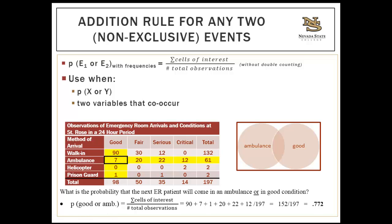For example, what's the probability that the next ER patient will come in an ambulance or be in good condition? We're looking for everything in the Venn diagram — either coming in an ambulance or being in good condition. So we're looking at patients in good condition who arrived any way, and patients in any condition who arrived by ambulance. You must be careful not to double count those patients who arrived in an ambulance and are in good condition — the middle of the Venn diagram.